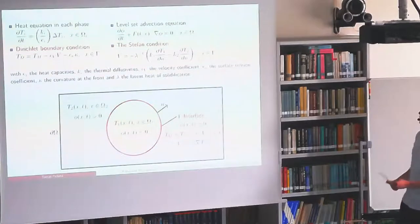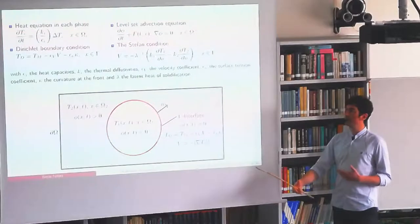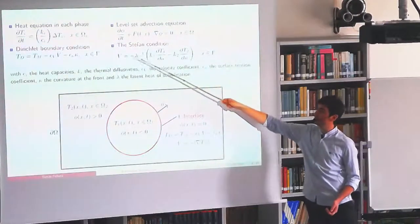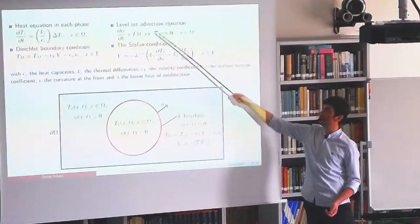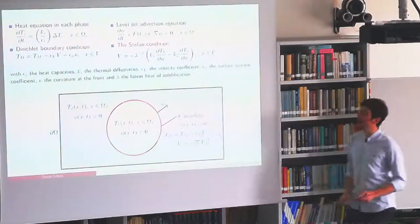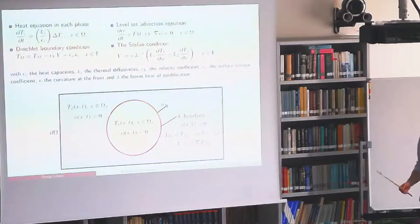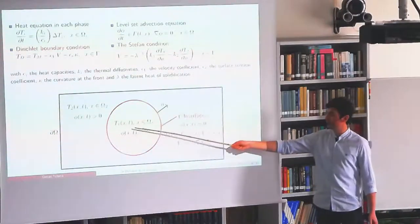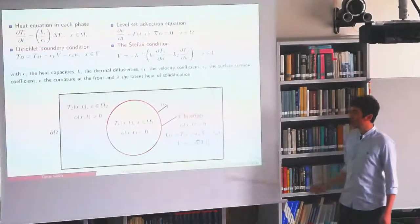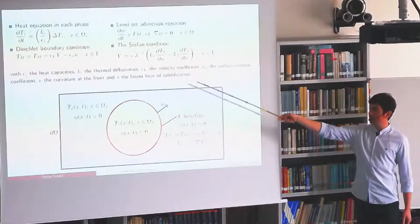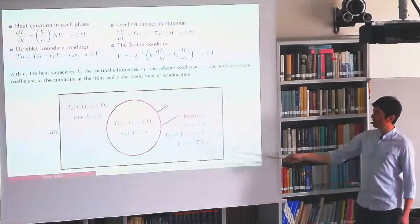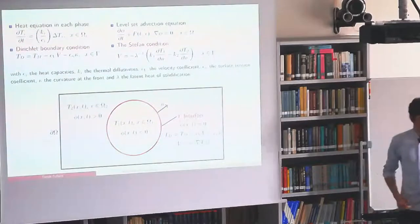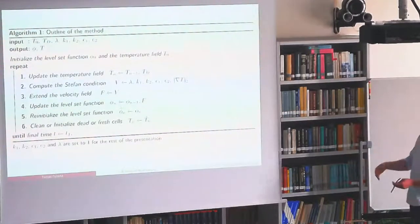The level set advection equation moves the interface according to a speed function F. At the interface, we have the Dirichlet boundary condition: temperature equals Tm (melting temperature) plus terms depending on velocity and curvature — the classical Stefan problem without these terms, or the Gibbs-Thomson relation with them. The speed at the interface depends on the normal jump in temperature gradient, dT1/dn and dT2/dn. The velocity V defined at the front must be extended in the normal direction to advect the level set function.